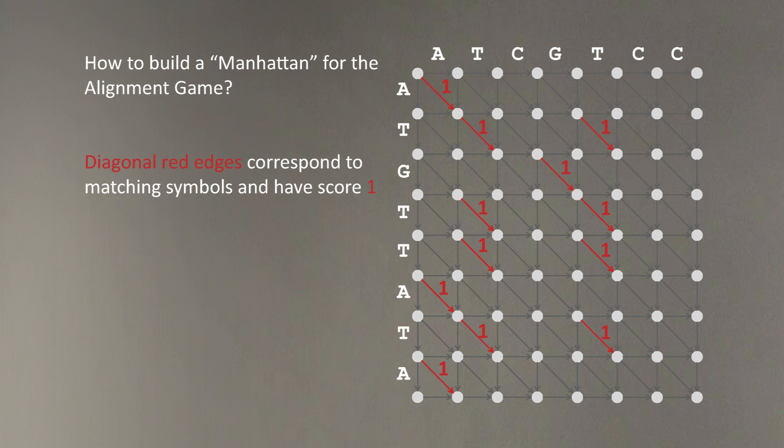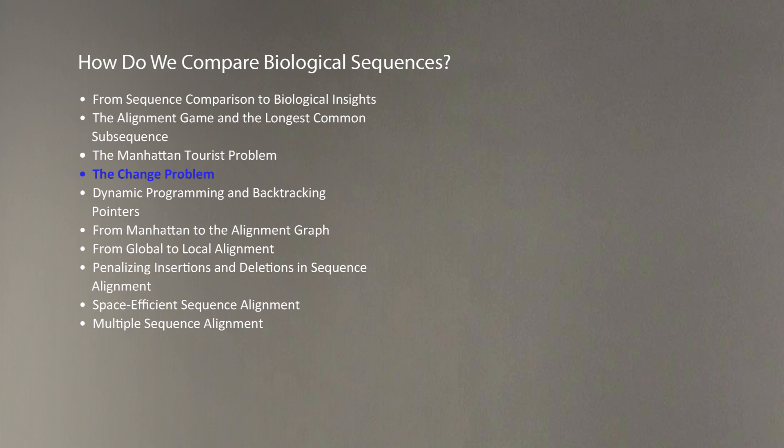In the case of longest common subsequence, what would be this Manhattan? In this case, diagonal red edges correspond to matching symbols and have a score of 1, if the corresponding symbols for these diagonal edges match to each other. And highest scoring alignment in this case is simply longest path in a properly built Manhattan.